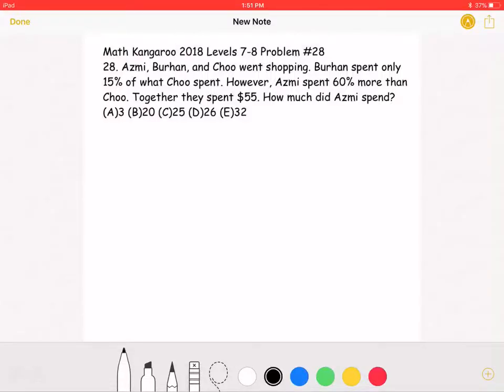This is the 2018 Math Kangaroo Level 7-8 Problem Number 28. Asmi, Burhan, and Cho went shopping. Burhan spent only 15% of what Cho spent. However, Asmi spent 60% more than Cho. Together they spent $55. How much did Asmi spend?